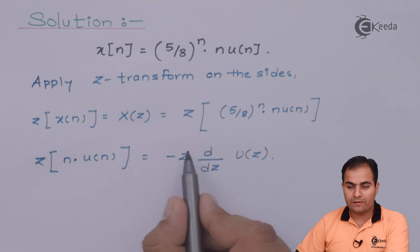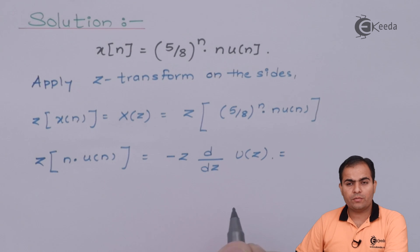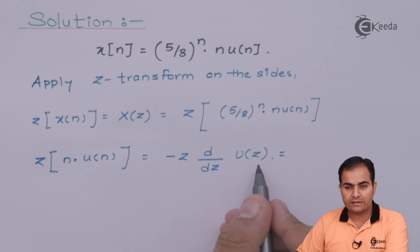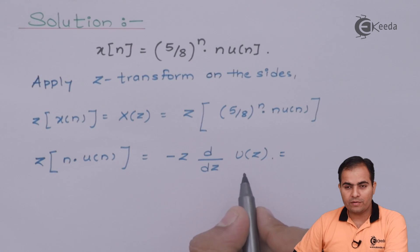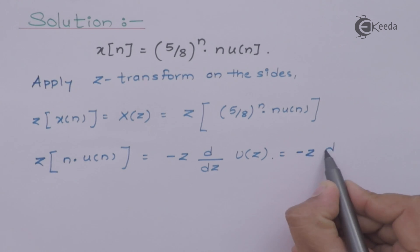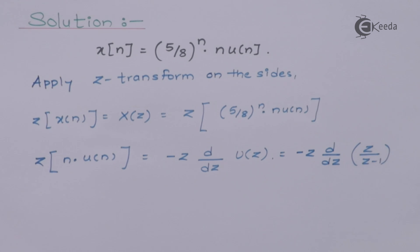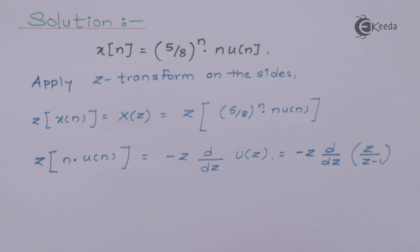The Z-transform of the unit step sequence u(n) is z/(z−1). Remember this formula because it is used in virtually every Z-transform and inverse Z-transform numerical. Now, to calculate d/dz of z/(z−1), we use the u/v formula: v times derivative of u minus u times derivative of v, all divided by v squared.